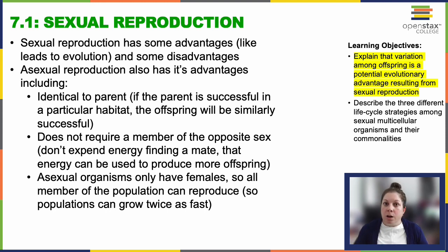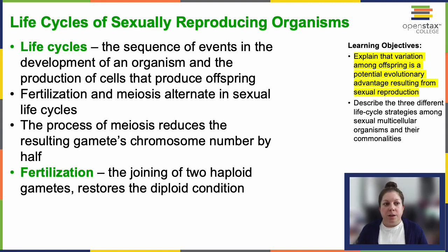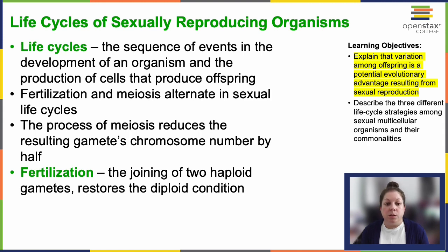Fertilization then combines unique gametes from two different individuals, creating additional opportunities for genetic diversity in the offspring. There are a few different life cycle styles that sexually reproducing organisms can utilize, but they all involve alternating between meiosis and fertilization. Meiosis reduces the number of chromosomes in the gametes, while fertilization combines two haploid gametes to restore diploidy — having two copies.